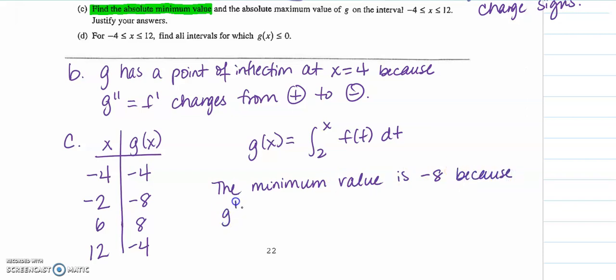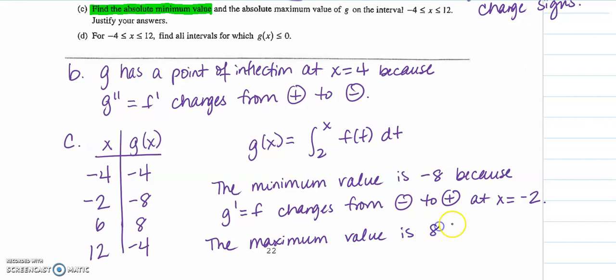Because g prime equals f changes from minus to plus, or negative to positive, at x equals negative 2. You write another sentence for the maximum value. The maximum value is 8 because g prime equals f changes from plus to minus at x equals 6.